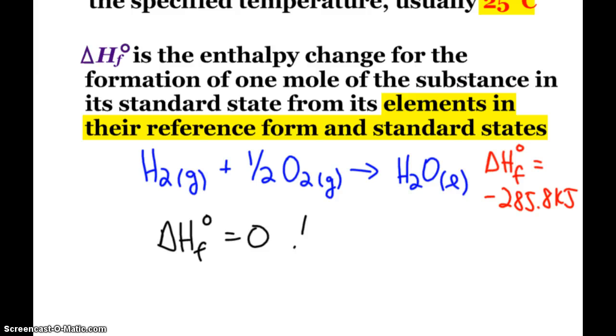And again, that's for elements such as the hydrogen gas here or oxygen gas. When we have the reference form of the elements, you can look at these different tables and charts and you would see that they would have a delta H of formation of zero.